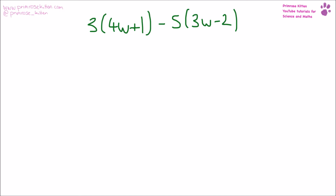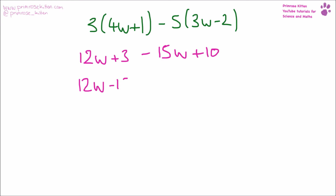Here are some more to expand and simplify. That is going to give us 12w plus 3 minus 15w plus 10. Collecting like terms: 12w minus 15w plus 3 plus 10, that is going to be minus 3w plus 13.